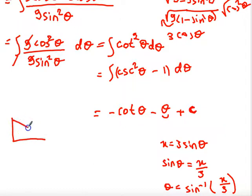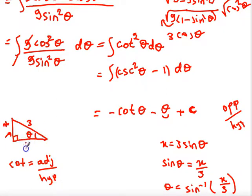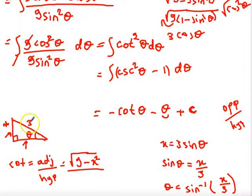To find cotθ, consider a right triangle where θ is one angle. Since sinθ = opposite/hypotenuse = x/3, the opposite side is x and the hypotenuse is 3. By the Pythagorean theorem, the adjacent side is √(9 − x²). Therefore, cotθ = adjacent/opposite = √(9 − x²) / x. Substituting θ and cotθ back completes the solution.